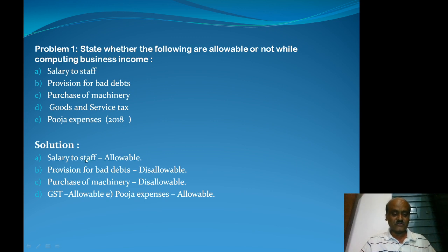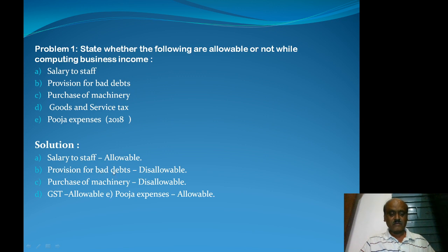Salary to staff is an allowable expense. Provision for bad debts — any provision or any reserve — is disallowable. So provision for bad debts is disallowable. Purchase of machinery is a capital expenditure, so it is also disallowable.